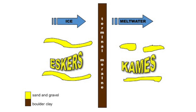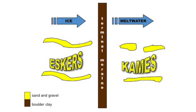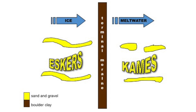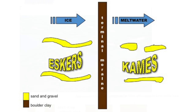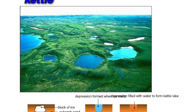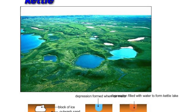Kame terraces are very similar to eskers, except they are formed at the side of a glacier where the glacier meets the valley wall.